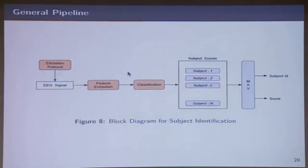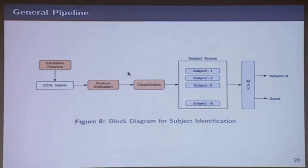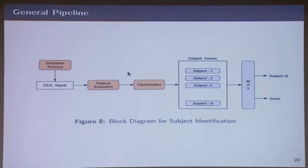Normally subject identification has been done in the literature using a specific elicitation protocol in the same session — you make the person watch the same type of video again and again, take some data for training, some for testing, and perform subject identification. But we felt this is meaningless because if I want to build a vocabulary-based speech recognition system, I need to ensure that it works for new vocabulary irrespective of the task the person is doing. As the auditory cortex is always awake — it's always listening — does not matter if you're supposedly sleeping, you're still listening. Can we find subject characteristics?